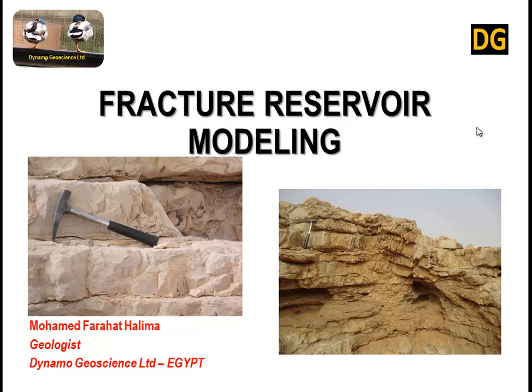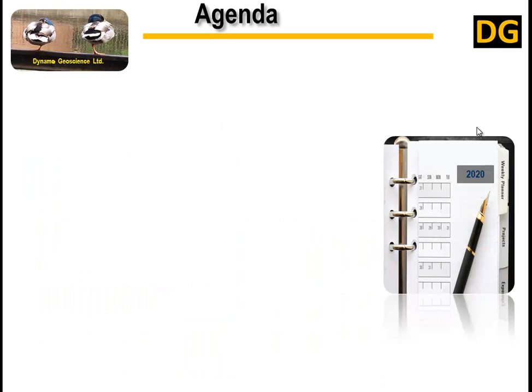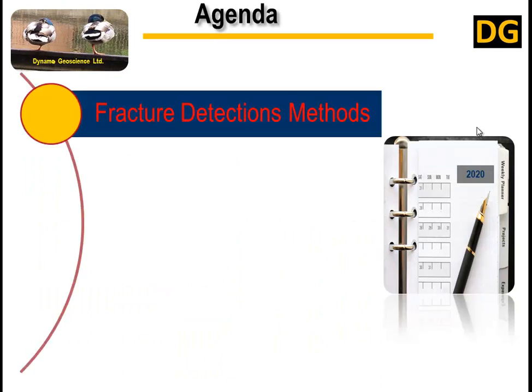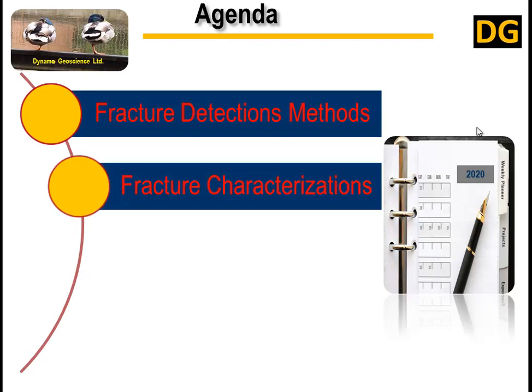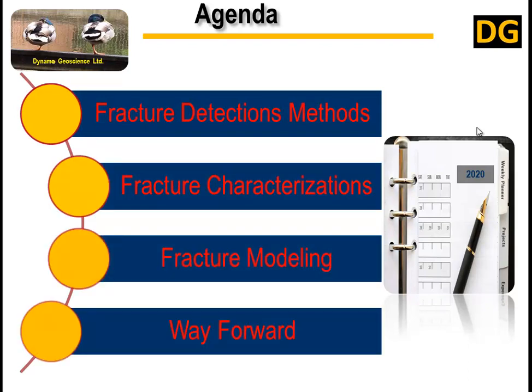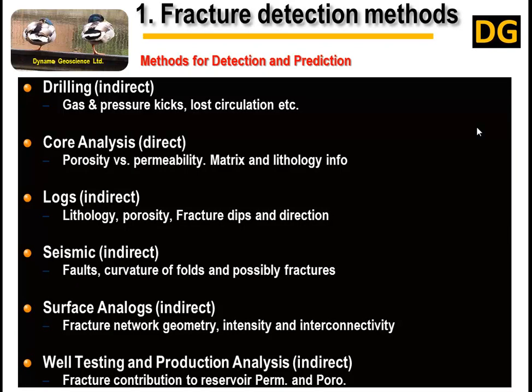The title of this session is Fracture Reservoir Modeling. The agenda covers: improved fracture detection methods, fracture characterization, fracture modeling, and the way forward. We have six methods — five of them are indirect methods of fracture detection, and just one direct method, which is core analysis.